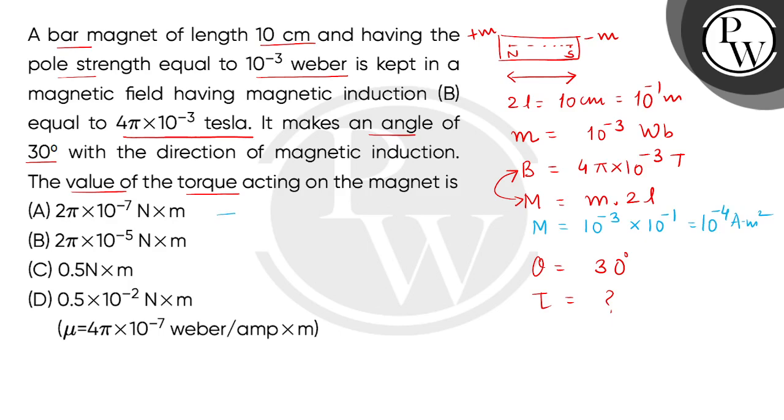Now let's express the torque as MB sin theta. We will put values: 10 to the power minus 4, B's value is 4 pi multiplied by 10 to the power minus 3, and sine theta's value we put as 30 degrees. So, sine 30 degrees equals half. So children, here what we'll get is 2 pi multiplied by 10 to the power minus 7 newton meter for the torque.